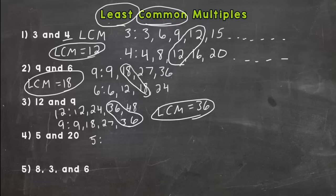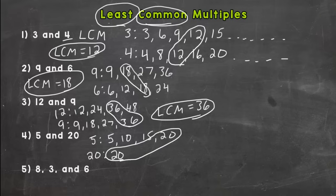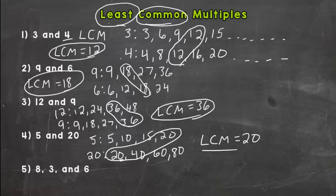Number four — five and twenty. If you think you have this down, go a little ahead of me and then check your answer with mine. For five: five, ten, fifteen, twenty. Notice for twenty — I start with twenty, and if you notice that we already have a match, there's no need to continue. Our LCM for five and twenty is twenty. Your least common multiple can be one of the numbers in your problem — that's okay, it happens.